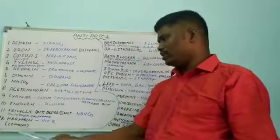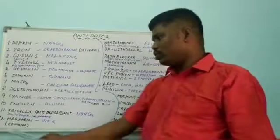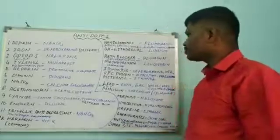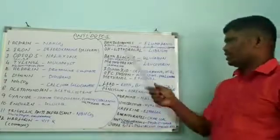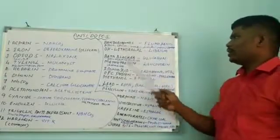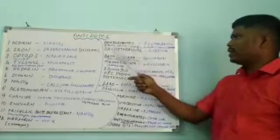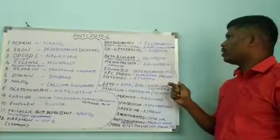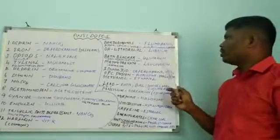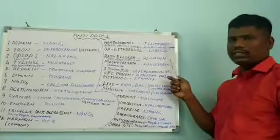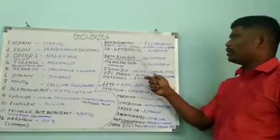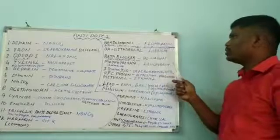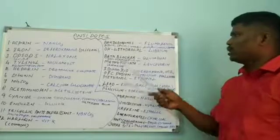Next drug is warfarin. Warfarin is an anticoagulant, otherwise called Coumadin. Vitamin K is used as an antidote. Next drug is benzodiazepines — like alprazolam, Librium, clonazepam, diazepam, lorazepam. In benzodiazepine overdose, flumazenil is used as an antidote.